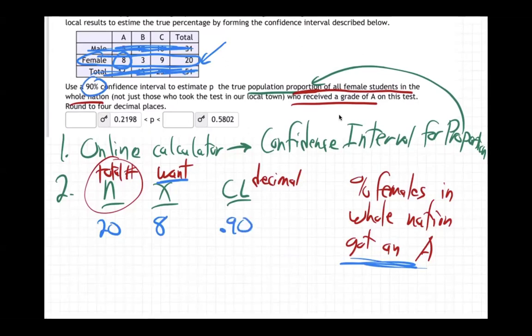So put those numbers into the online calculator and you will get these two answers, which means we're ninety percent confident that the real average for all of America—because this is just our particular town, right, but based on these results it gives us kind of a general idea what might be true, what is likely true for the whole nation—makes us ninety percent confident that if you're talking about the whole nation of females who took the water safety test, somewhere between 21, or that's about 22, and 58 percent of the females in the whole nation got an A on the test.